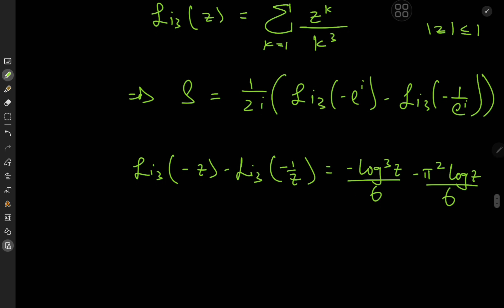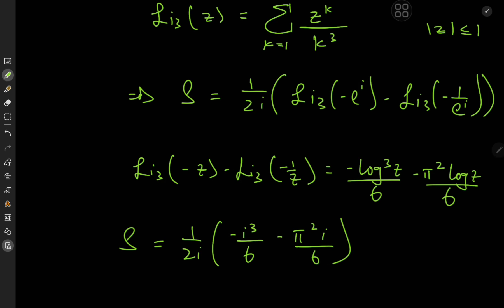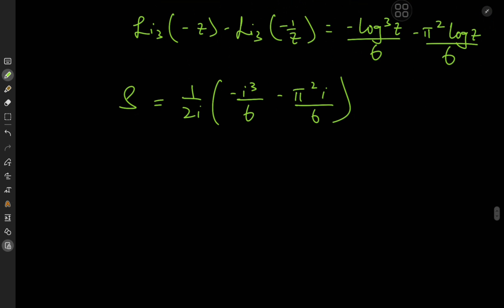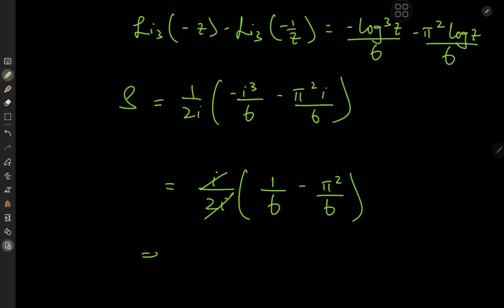In our case z equals e to the i, which fits perfectly since we have e to the i and its reciprocal e to the negative i. The logarithm of e to the i is simply i. So S equals 1 over 2i times negative i³ over 6 minus pi² times i over 6. Since i³ equals negative i, we can factor out i, giving 1 over 2i times i times 1 over 6 minus pi² over 6. The i cancels, yielding S equals 1 minus pi² divided by 12.